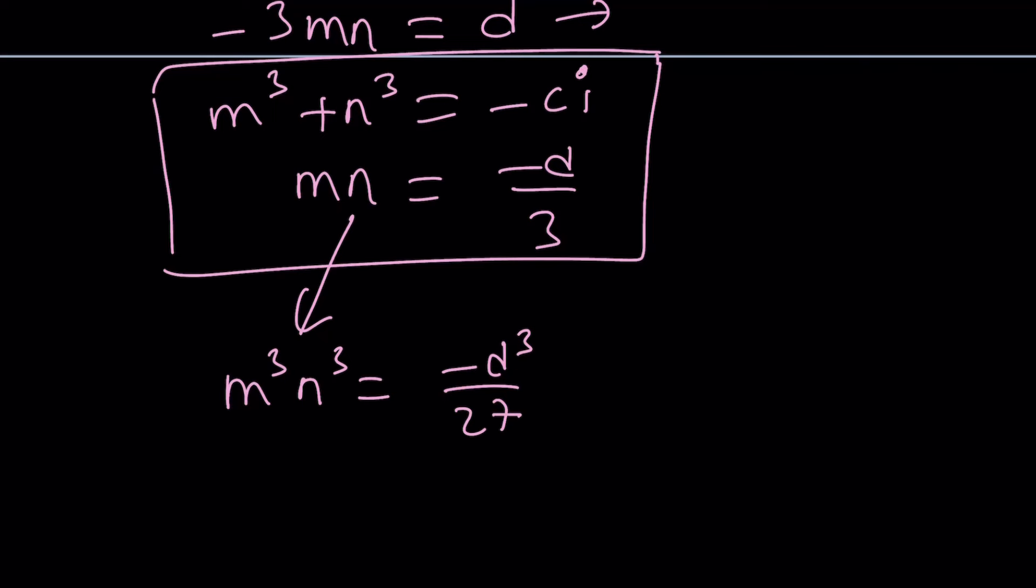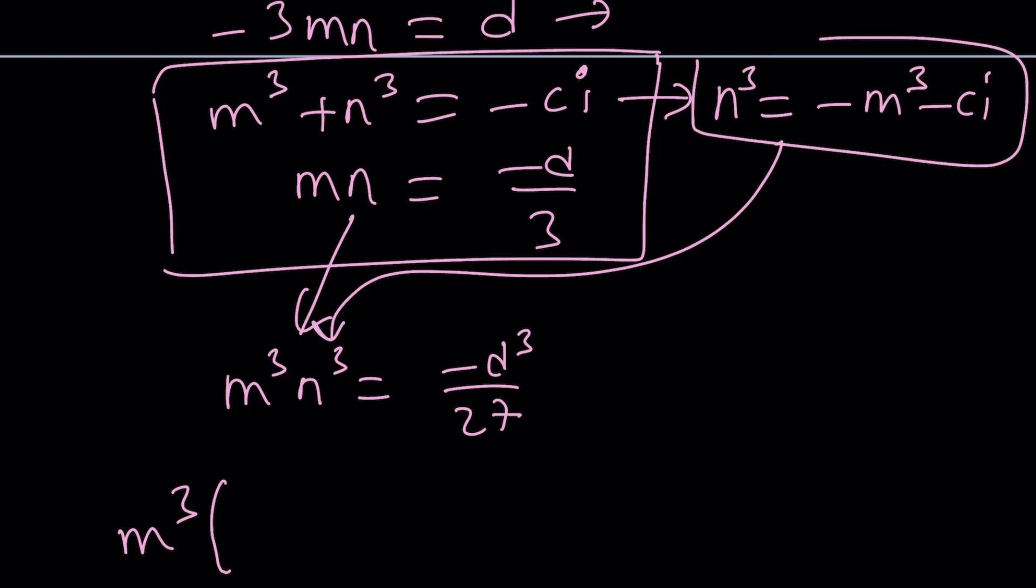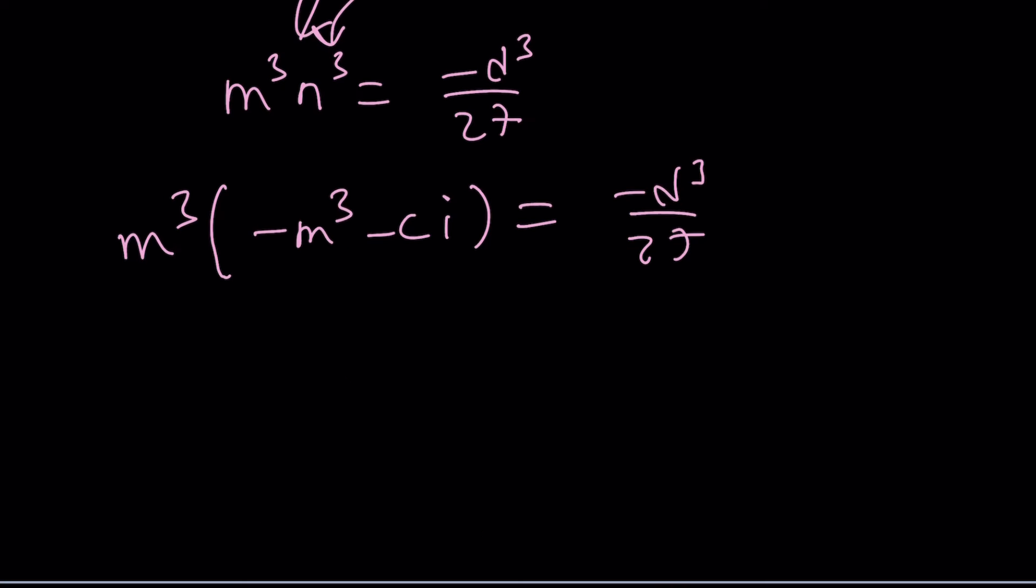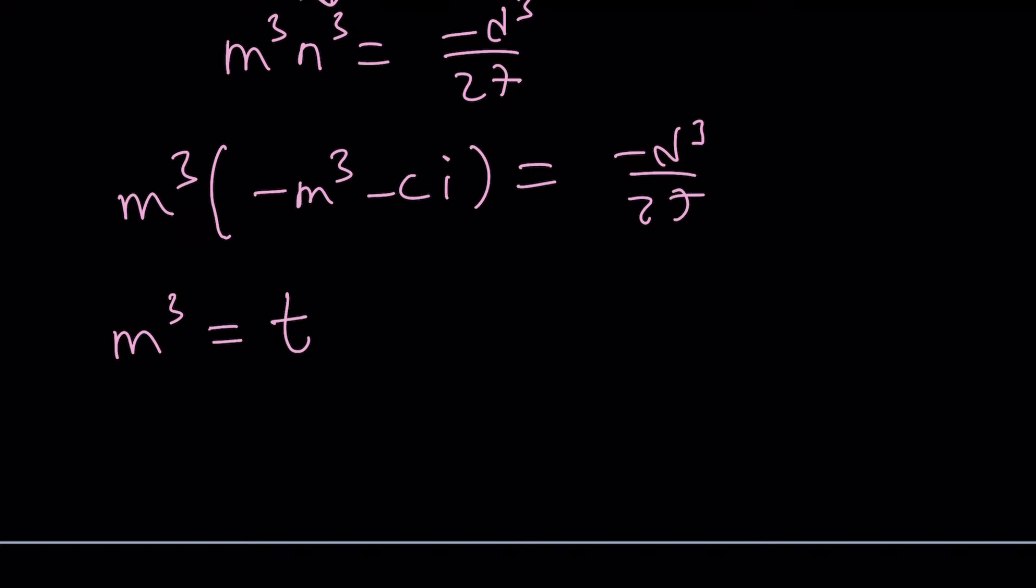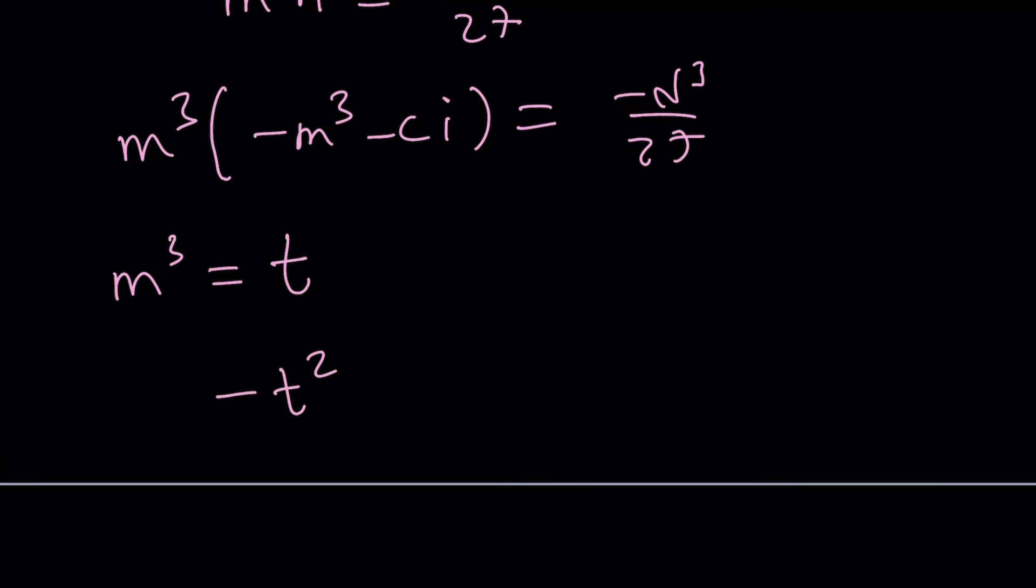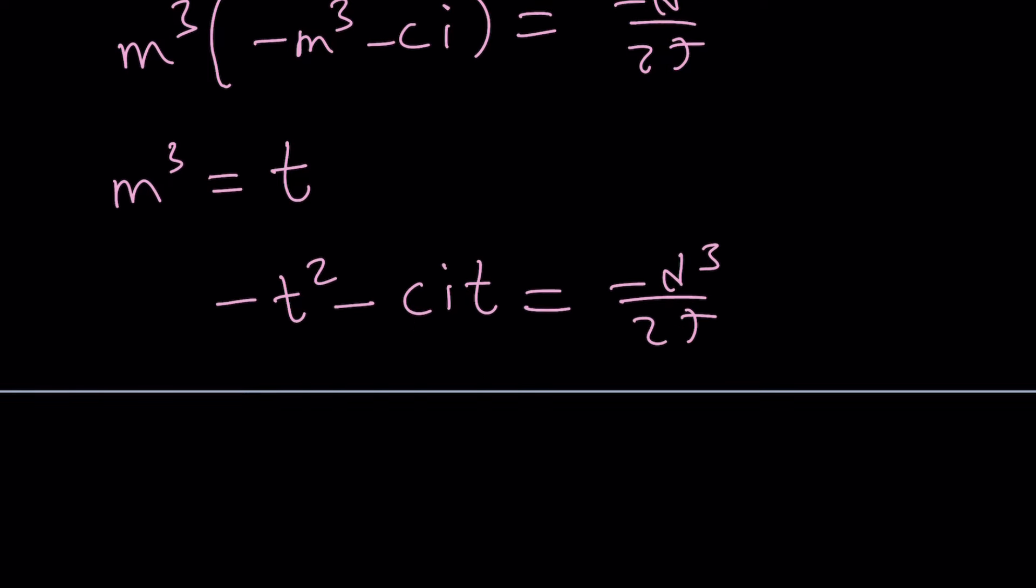And then from the first equation, you can isolate one of these like, for example, maybe N cubed, you can write as negative M cubed minus CI and then substitute that here. So you'll get M cubed multiplied by negative M cubed minus CI equals negative D cubed over 27. And then distribute. You're going to get M to the sixth and M to the third. And set M cubed equal to something like T maybe. So we would get something like negative T squared minus CI equals negative D cubed over 27. And if you put everything on the same side, you'll get a quadratic in T.